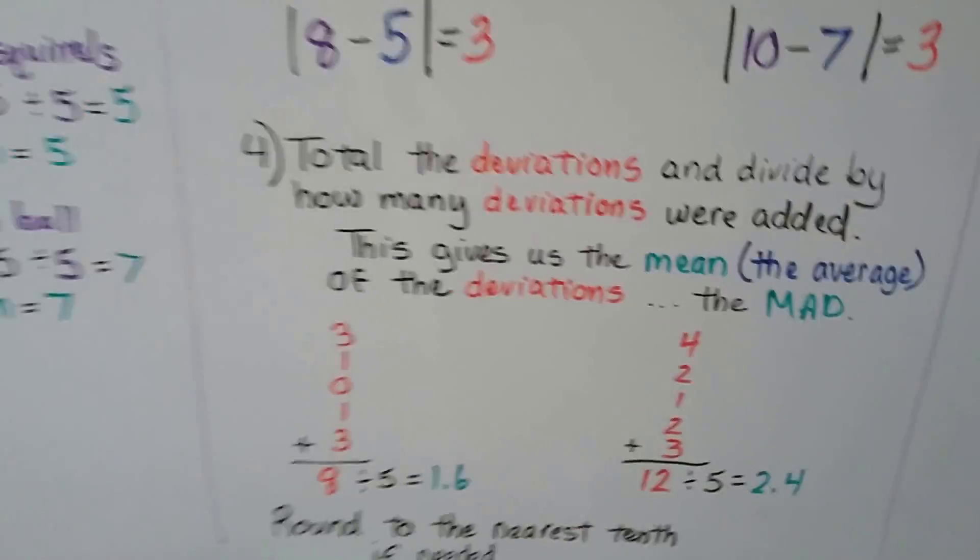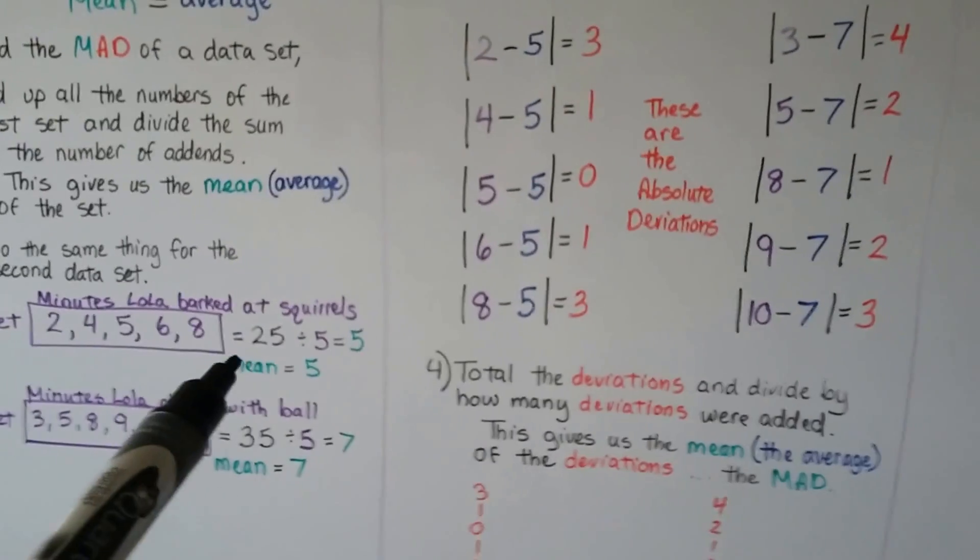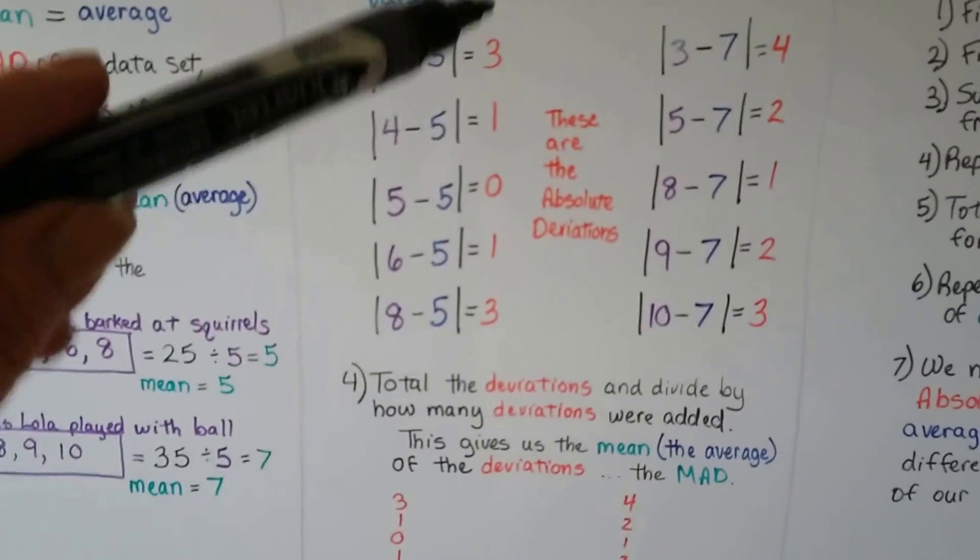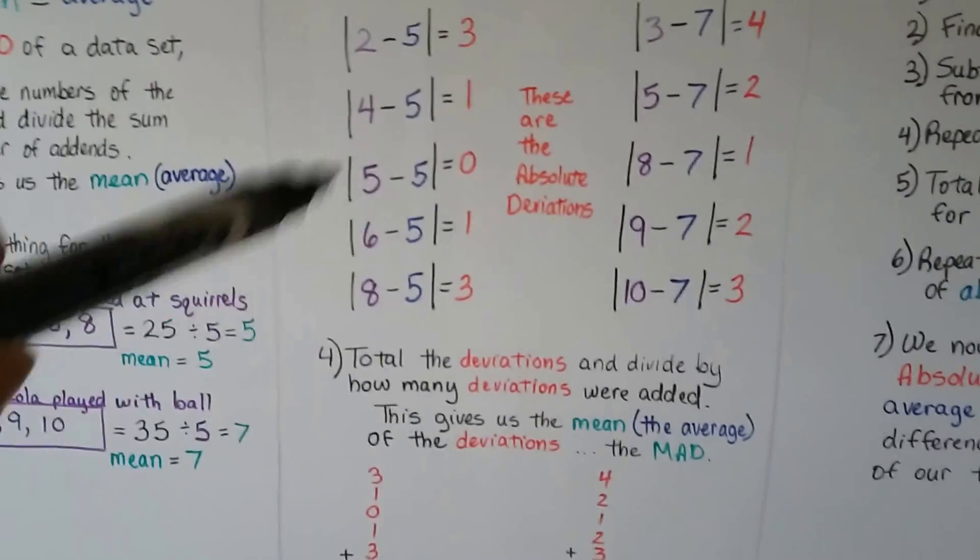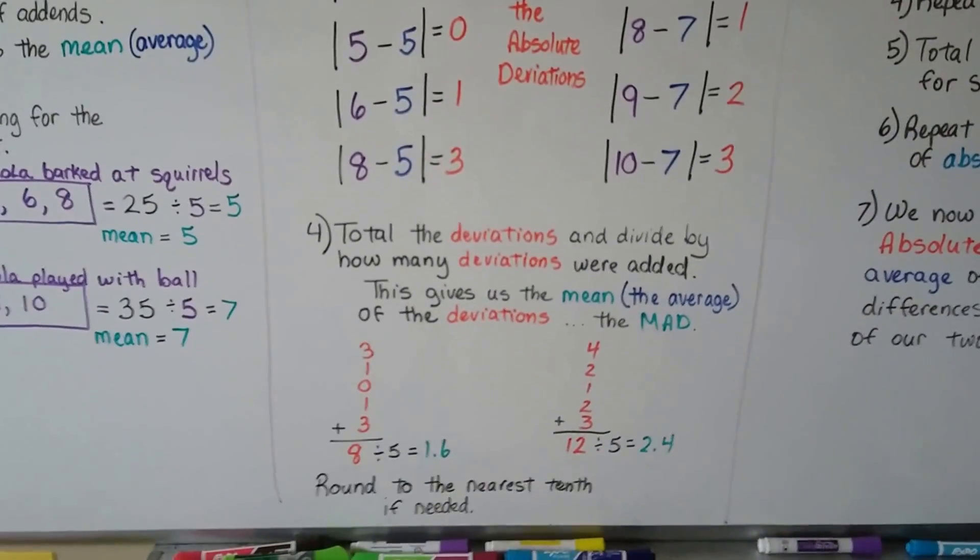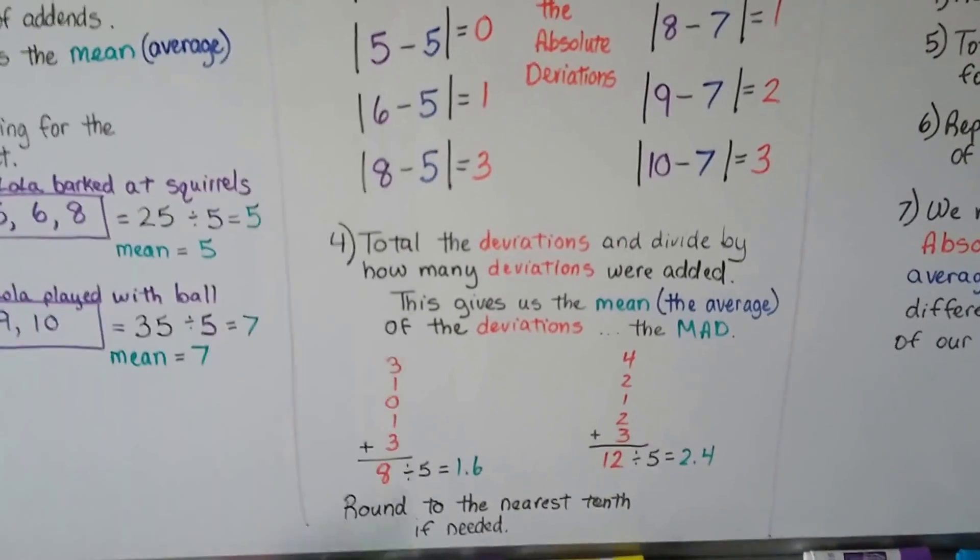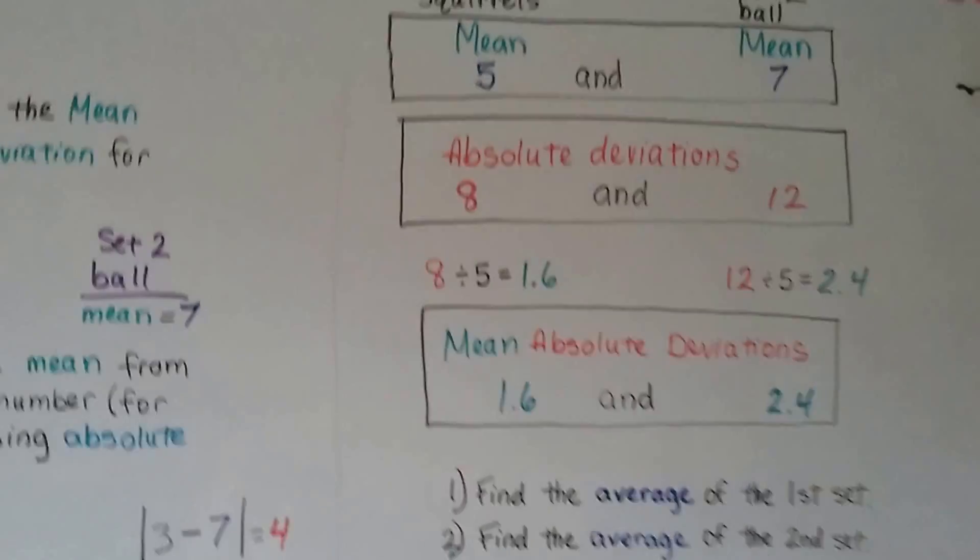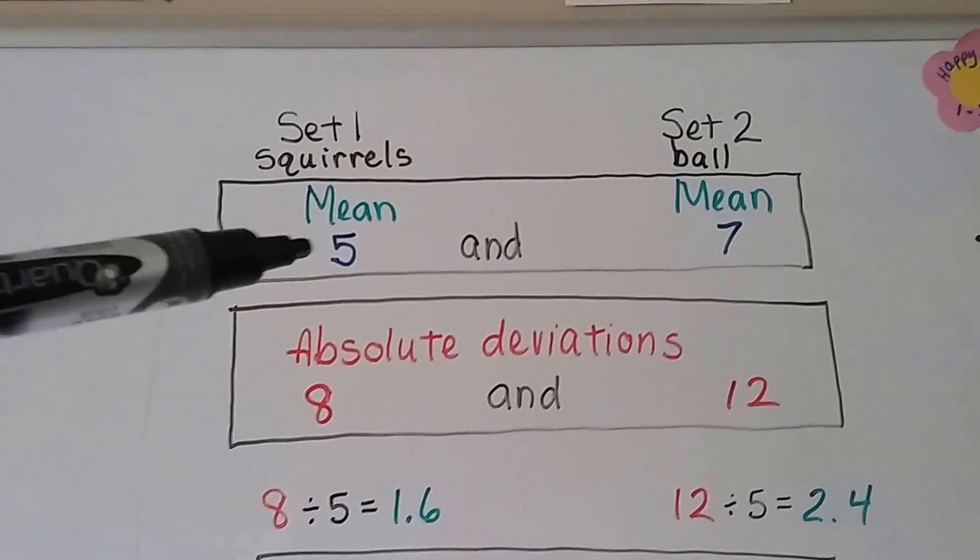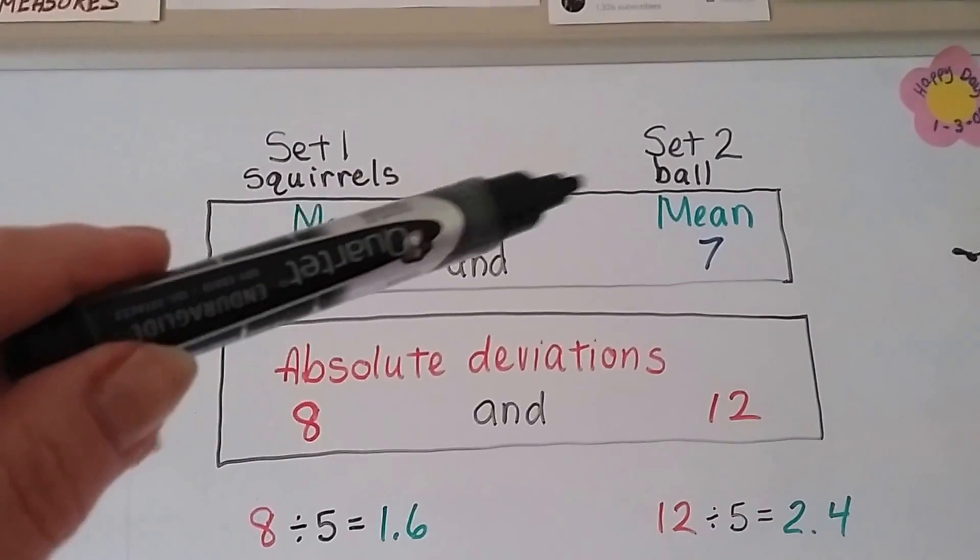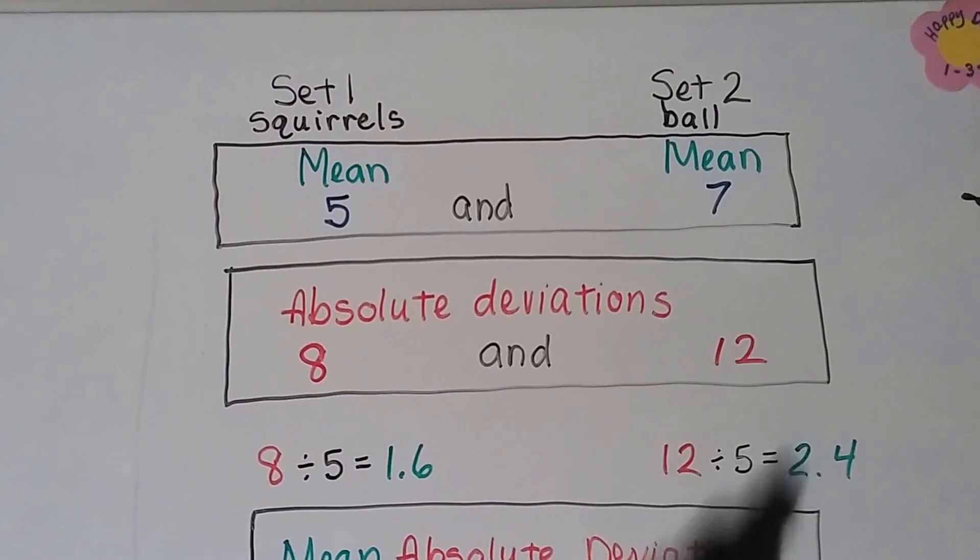So if you remember in the beginning of the video, I said it's an average of an average of differences. We found an average. We found the difference between the average and the original number, and now we did an average again. It's an average of an average of differences. Here's the differences. So we know for dataset 1, the average, the mean was a 5, and for the ball, it was a 7.